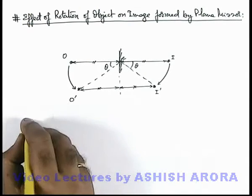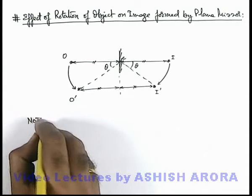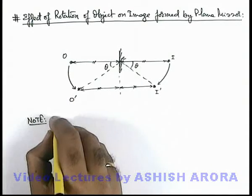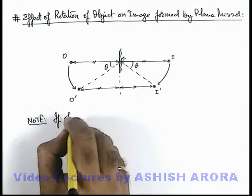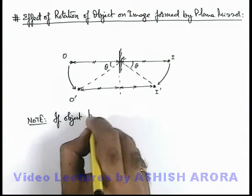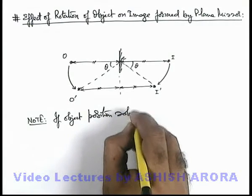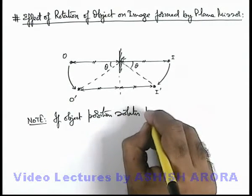So here we can write down a note to understand the correlation of rotation of image to that of object, that if object position rotates by some angle,